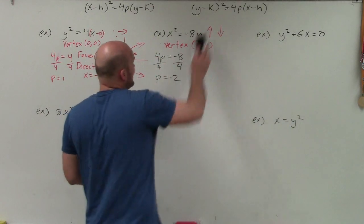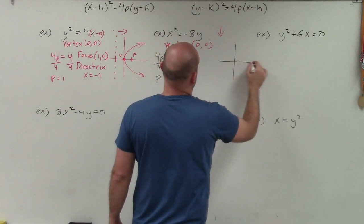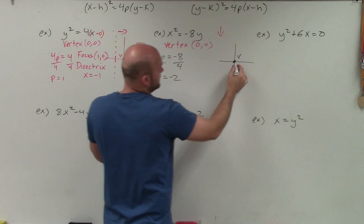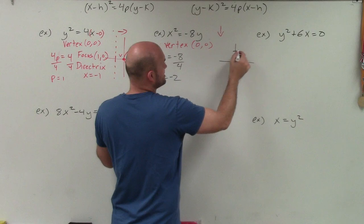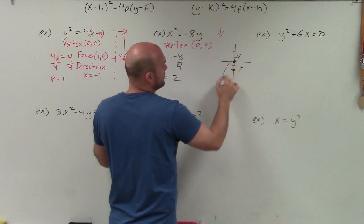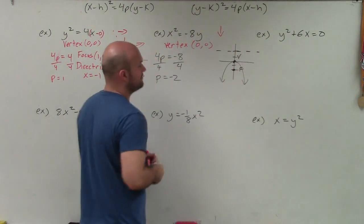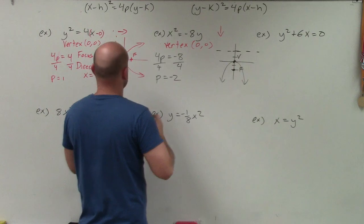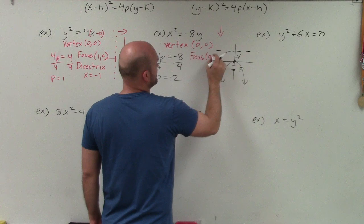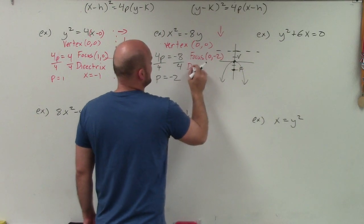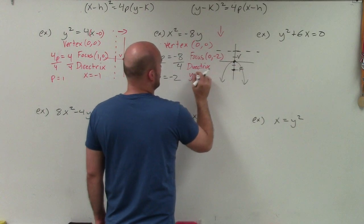I'll do a quick sketch: here's my vertex, p is negative 2 units down, so that's my focus, and the directrix is going to be 2 units up. My directrix is always perpendicular to my axis of symmetry. So my focus is at (0, −2), and my directrix is the horizontal line y = 2.